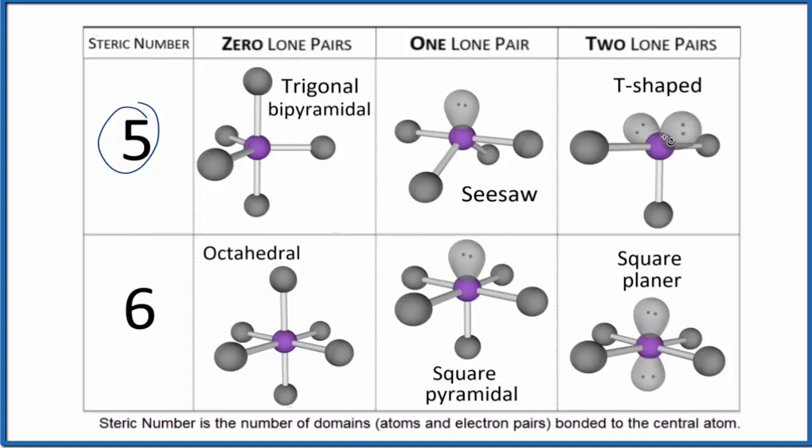We have five things attached to this central atom here. We have one, two, three atoms, and then two lone pairs. So we have five things attached. Two of them are these lone pairs. That's what gives us the T-shaped molecular geometry.